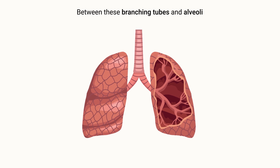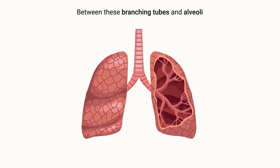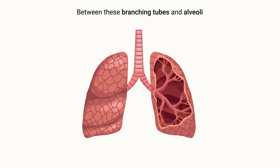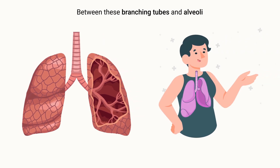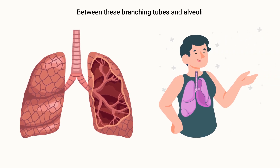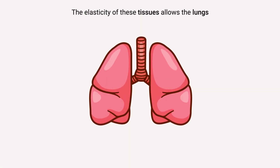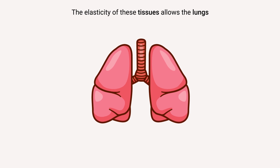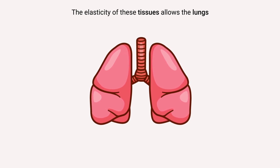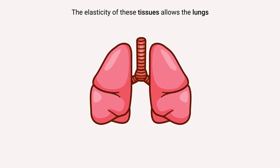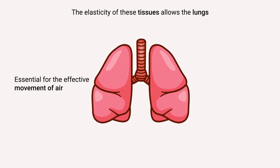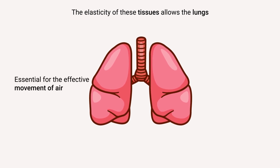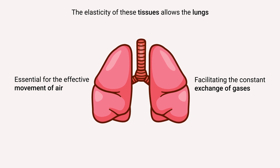Between these branching tubes and alveoli, the lungs are filled with elastic tissues. These tissues are crucial for the lungs' ability to inflate and deflate during breathing. Their elasticity allows the lungs to expand when inhaling air and contract when exhaling, facilitating the constant exchange of gases.